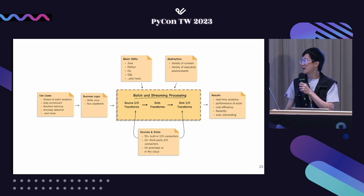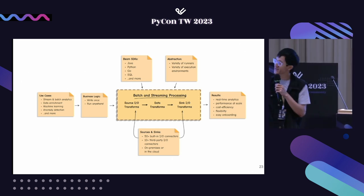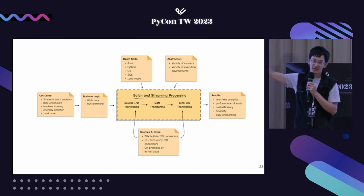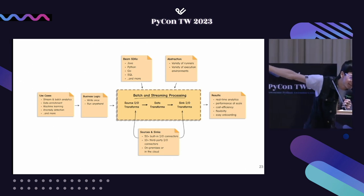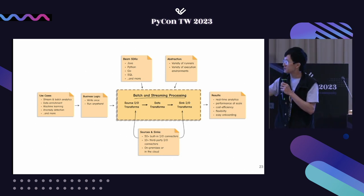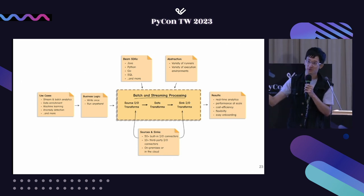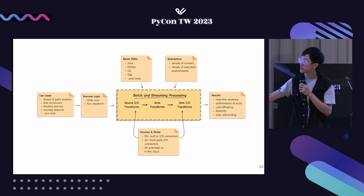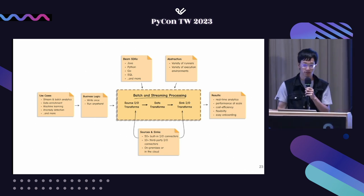If you search the Apache Beam website, there's an introduction: you have a use case, you have a problem, you build business logic for that problem. They provide a wonderful SDK in whatever languages — and of course Python is one of them, since this is PyCon. There's an abstraction layer so you can run your program anywhere — on the cloud, a local runner, or your own service — and eventually generate output to solve your problem. That's what Apache Beam does to handle batch and streaming processing.